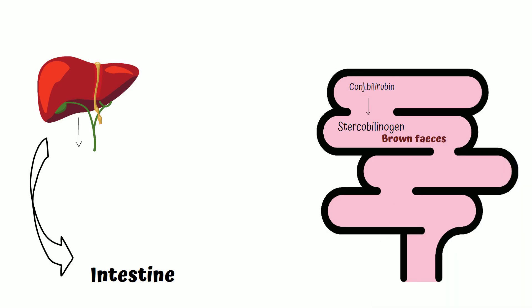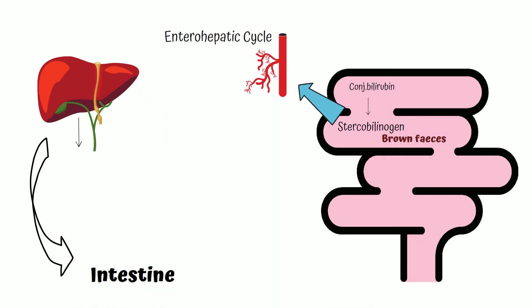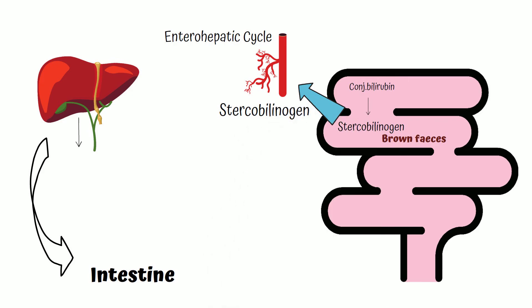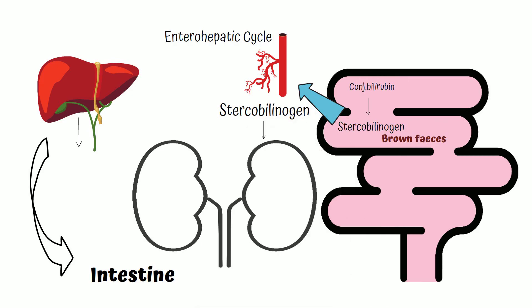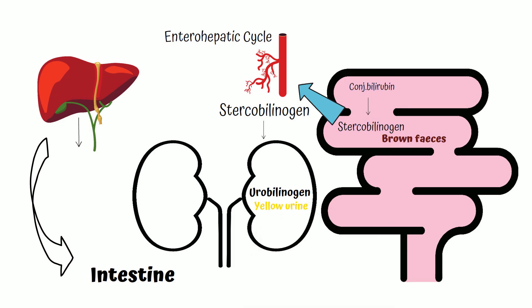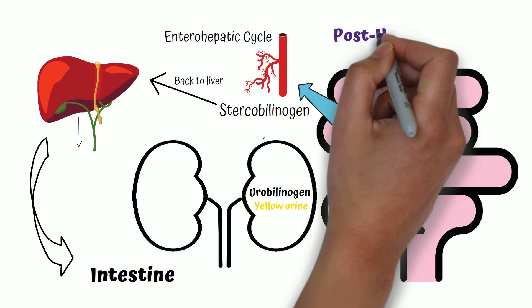Some of this stercobilinogen is absorbed back into the blood — this is the enterohepatic cycle. From the blood, some goes to the kidneys to form urobilinogen, which is found in urine and gives it its yellow color. Some goes back to the portal vein and to the liver.